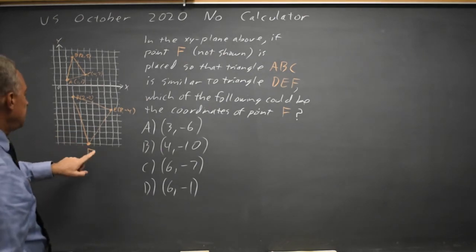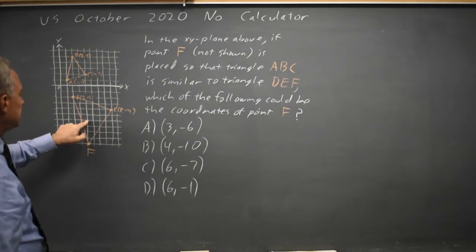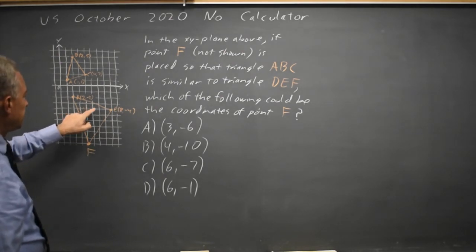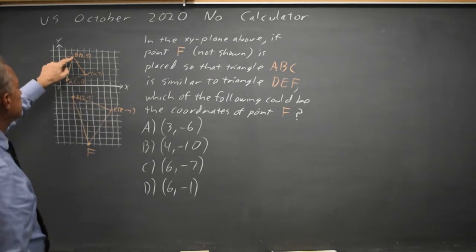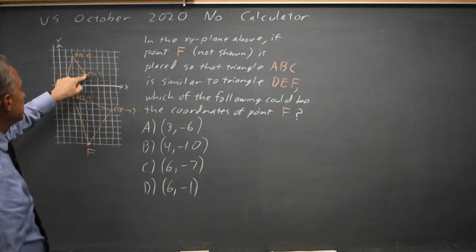That's again a 2 to 1 ratio. And from F to E I go up 2, 4, 6 and right 4. From B to C I go down 3 and right 2. Again 2 to 1 ratio.